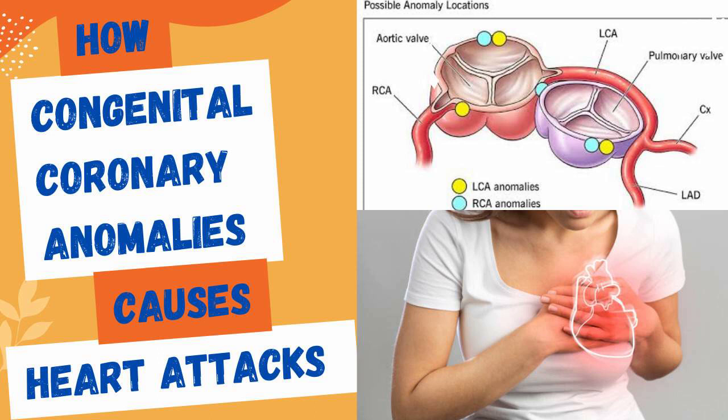Coronary artery abnormalities: congenital coronary anomalies encompass a range of abnormalities, including variations in the origin, course, and branching patterns of the coronary arteries. For example, a common anomaly is the anomalous origin of a coronary artery, where one or both coronary arteries arise from a different location than the typical anatomy. These abnormalities can lead to compromised blood flow to the heart muscle, increasing the risk of myocardial infarction.